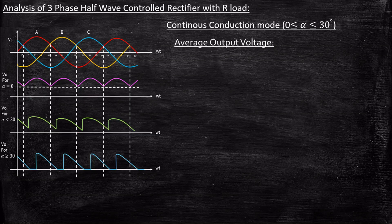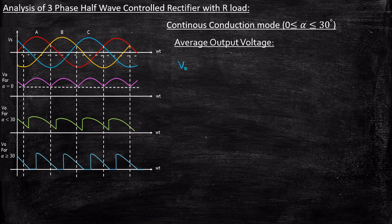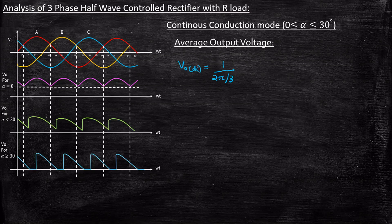So how do we derive the average output voltage expression? Vout_DC, the notation for average output voltage, is given by 1 over the total time period. The total time period here is 120 degrees, which can be written as 2π/3. This is the total time period from 30 to 150 degrees — so 150 minus 30 is 120 degrees. That is the total time period over which we consider the average output voltage for one particular cycle.